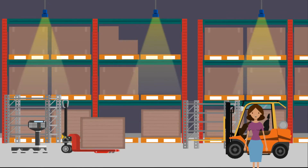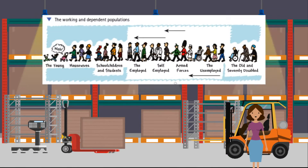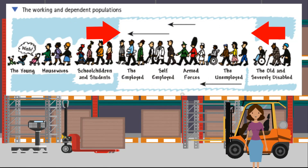Who are the working and dependent populations? The labor force is shown between the red arrows; the population outside these arrows are the dependent populations. The labor force participation rate measures the percentage of the population of working age that is economically active — either in work or looking for work — and therefore able to produce goods and services.